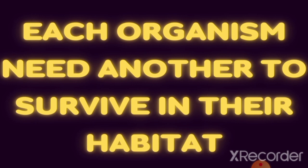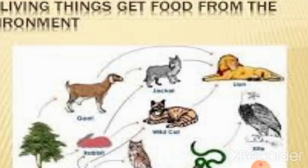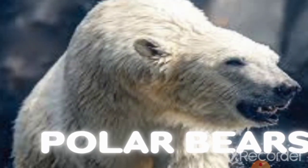...that living things need one another to be able to survive in their habitat. As we all know, some plants and animals such as goats need plants to be able to survive, while some other animals like the lion depend on the goats to survive. In this case study, we shall be looking at the polar bear and its relationship with other living things.